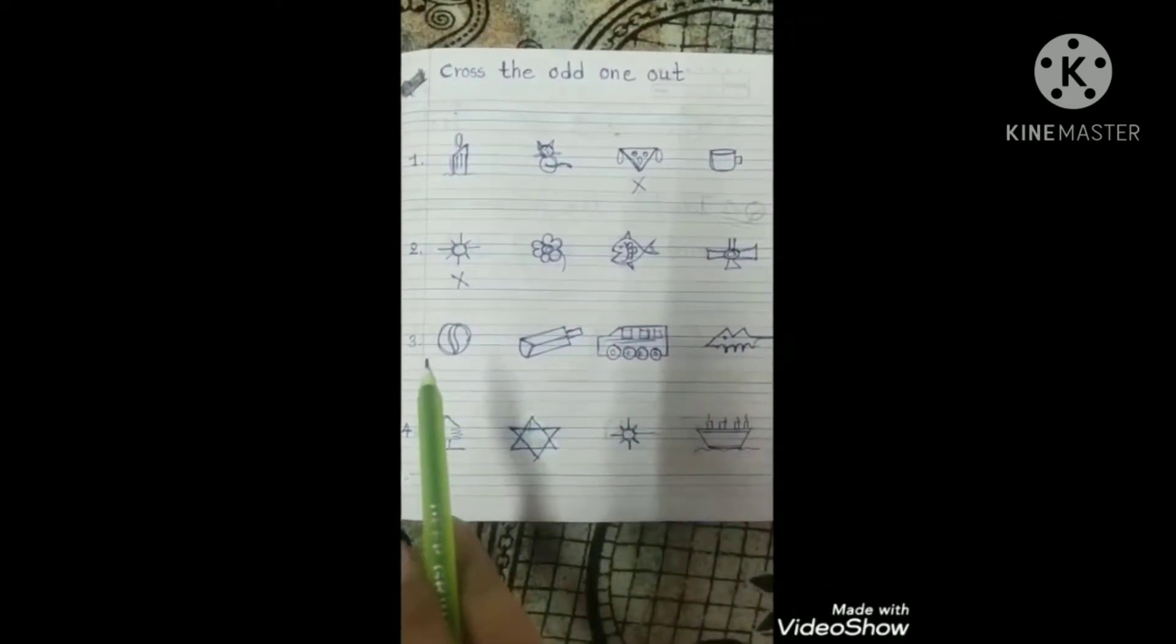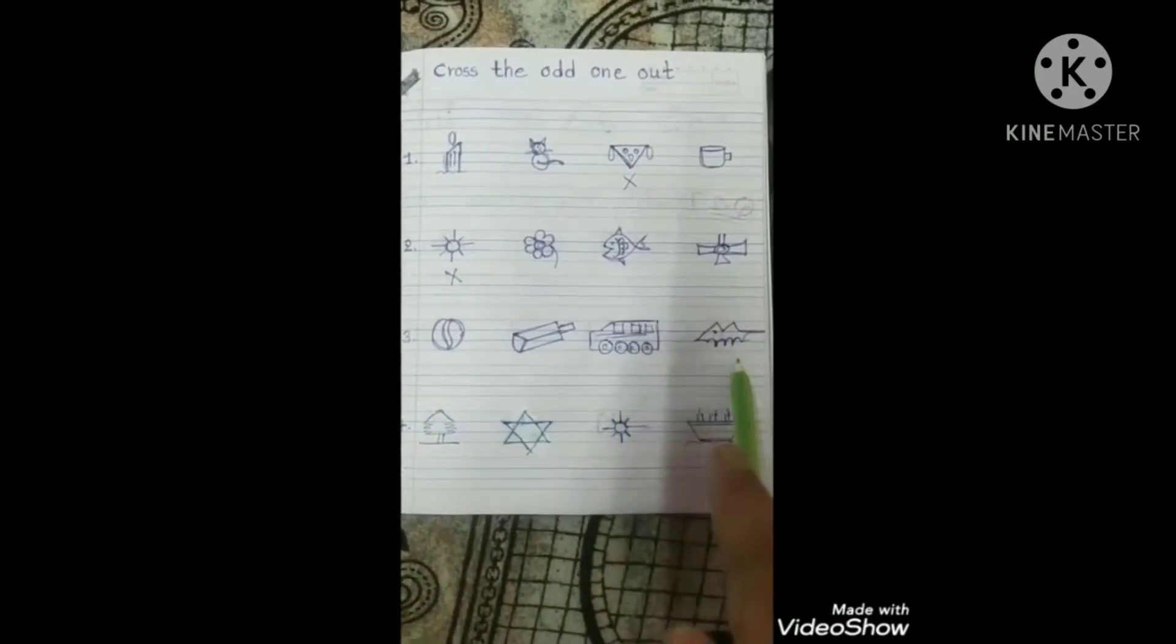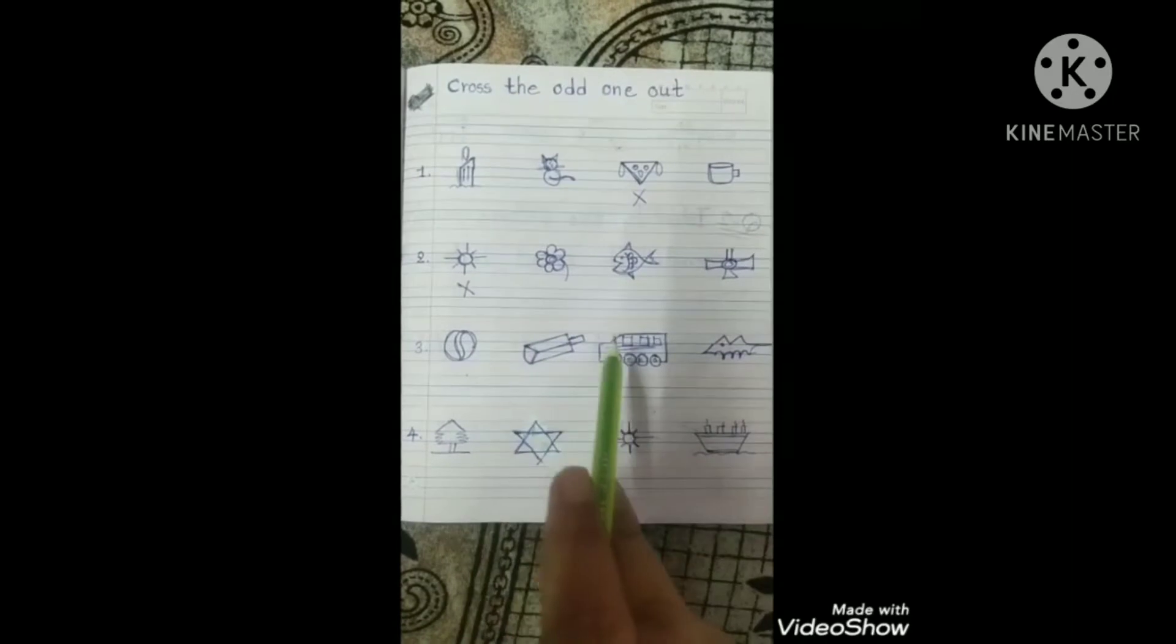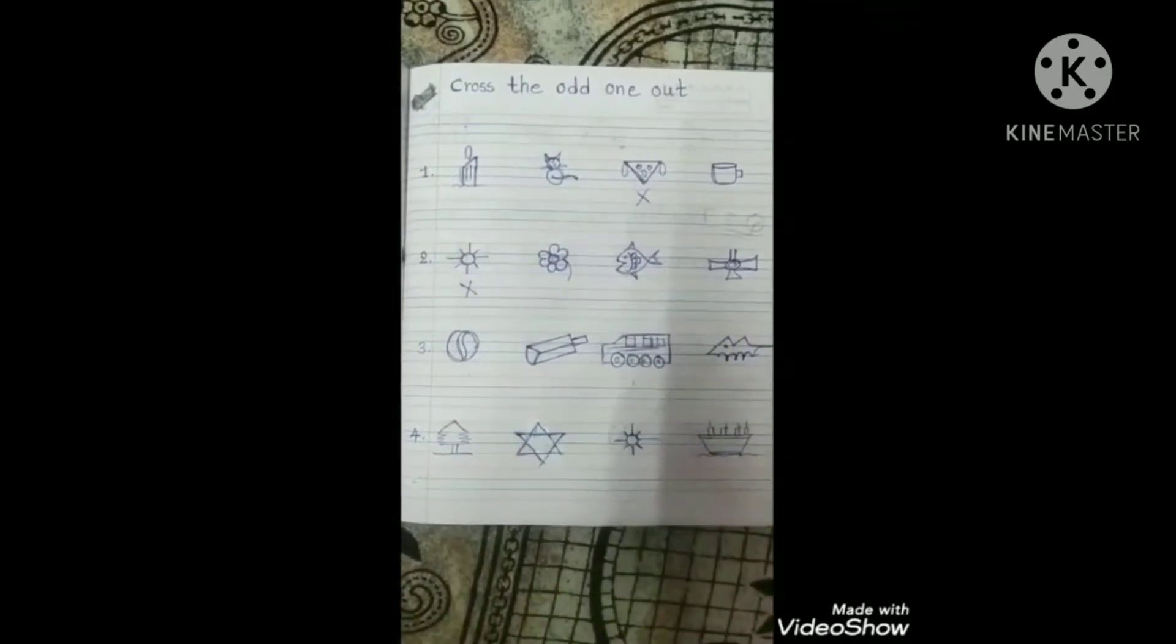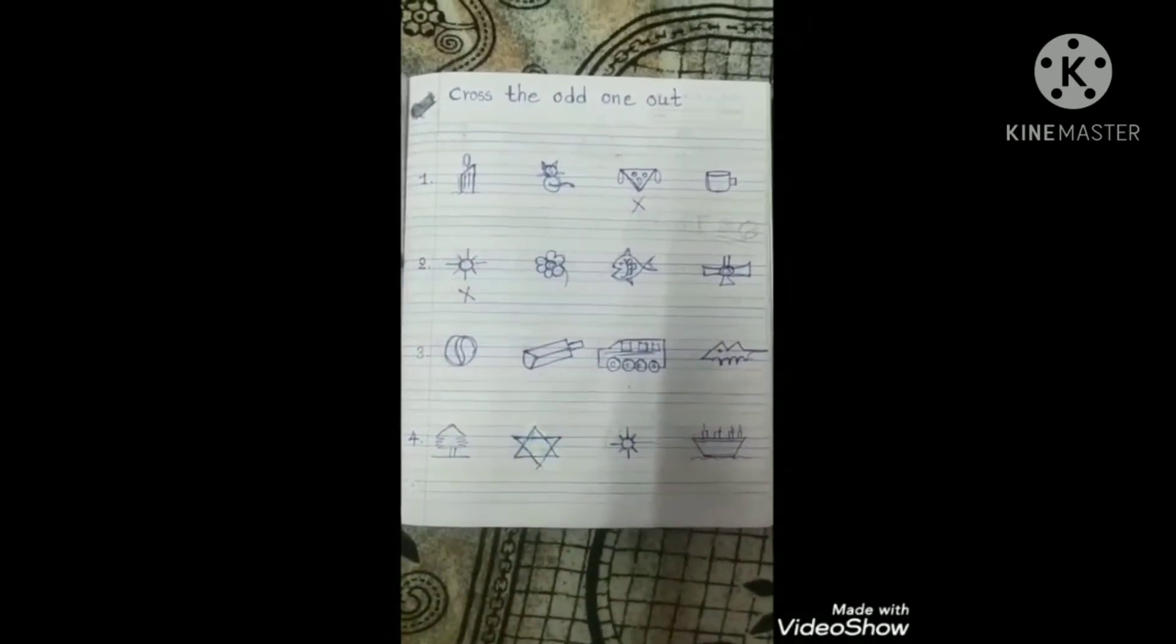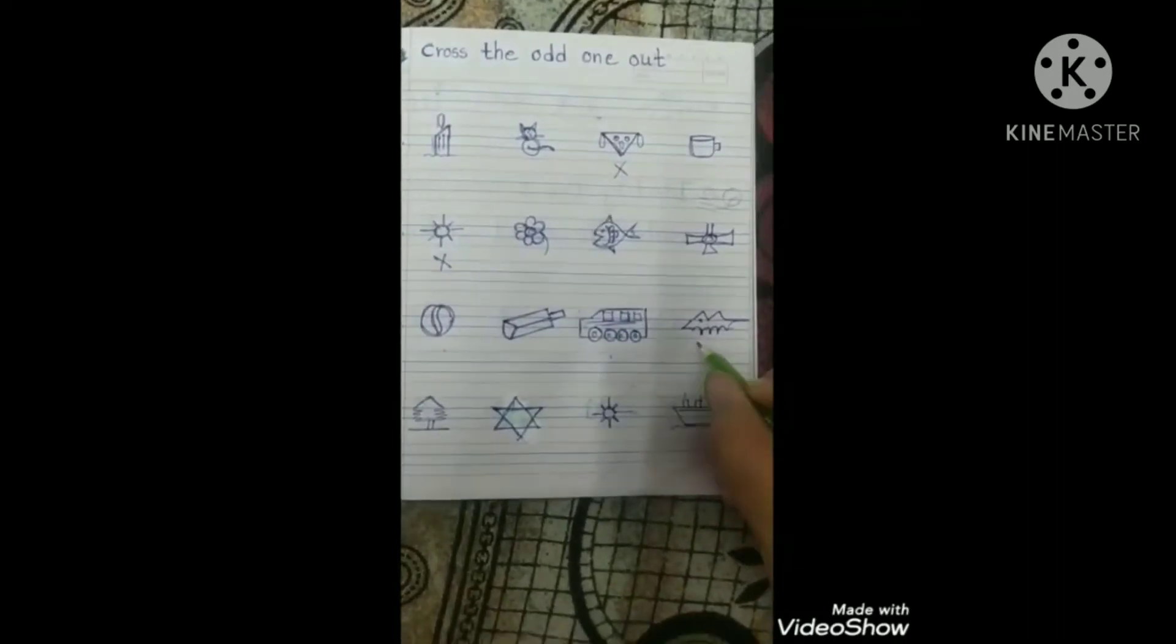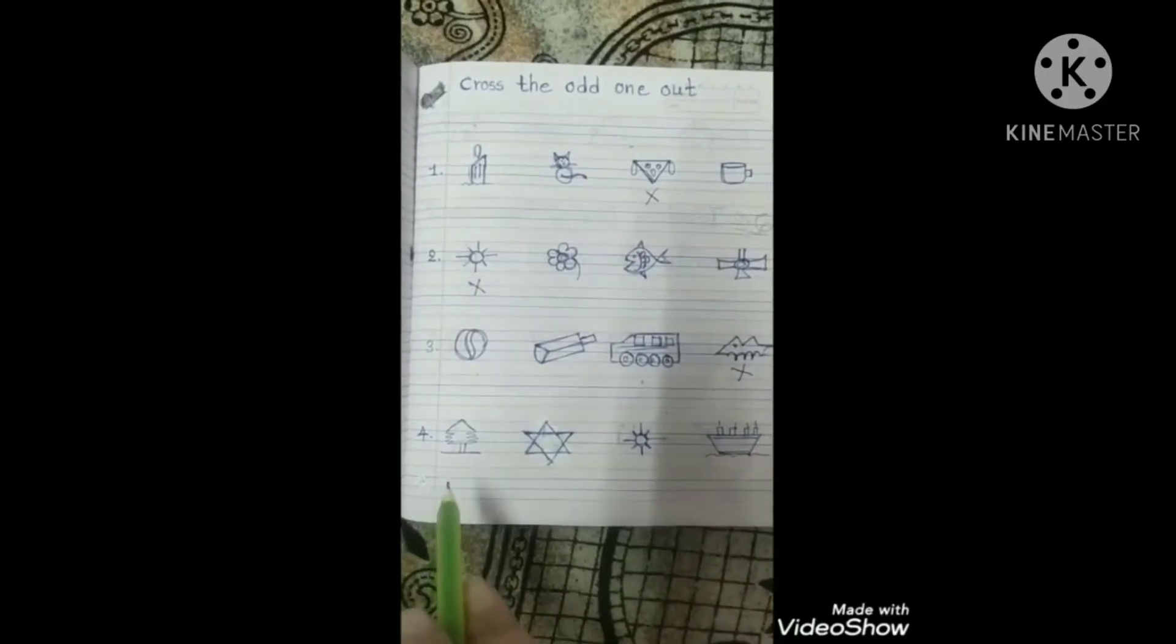Okay, very good. Now next one. See ball, bat, bus, and rat. R for rat, B for ball, B for bat, B for bus. R for rat. Kids, these three pictures start from B and rat starts from R. So you have to cross out rat because R for rat.